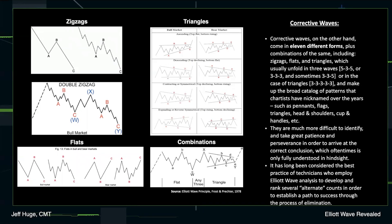Triangles are very specific because they are lateral consolidation forms. They tend to take on a very easily identifiable coiling process. There are really four different varieties of triangles: the ascending triangle, the descending triangle, the symmetrical triangle, and the expanding or reverse symmetrical triangle. All of those are detailed in the chart to the left. Many of these corrective wave forms make up the broad catalog of patterns that chartists have nicknamed over the years, such as pennants, flags, triangles, head and shoulders, and cup and handles. They are really Elliott wave forms that are a function of behavioral finance, and so they are somewhat more difficult to identify. They take a great deal of patience and perseverance in order to arrive at the correct conclusion, which oftentimes is only fully understood in hindsight.